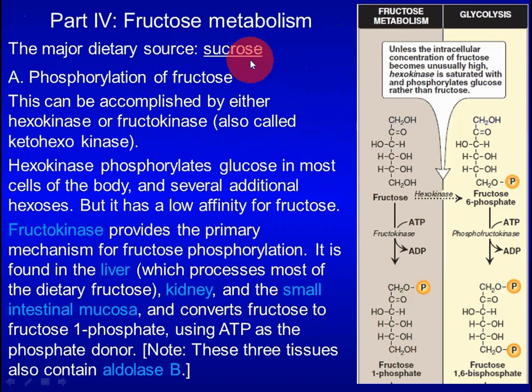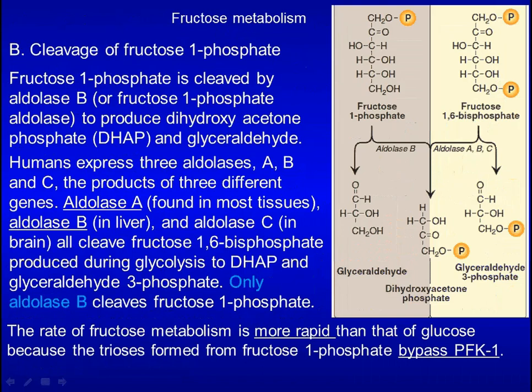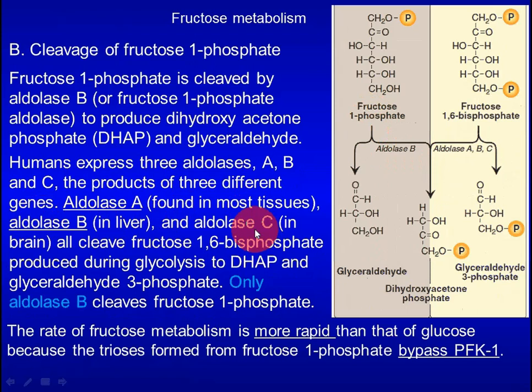The major dietary source for fructose is sucrose. To break down fructose, it must first be phosphorylated. Fructokinase is the main enzyme that directly phosphorylates fructose at position 1 and is found in liver, kidney, and small intestine. Fructose-1-phosphate can only be cleaved by aldolase B, while fructose-1,6-bisphosphate in glycolysis can be cleaved by aldolase A, B, or C. The rate of fructose metabolism is faster than glucose because it only needs to be phosphorylated once before cleavage, bypassing the PFK1 step.